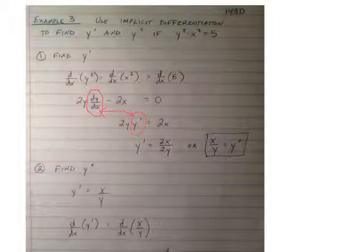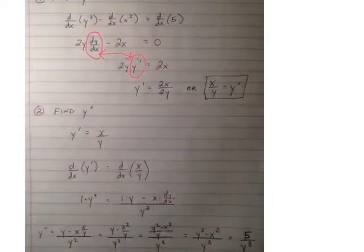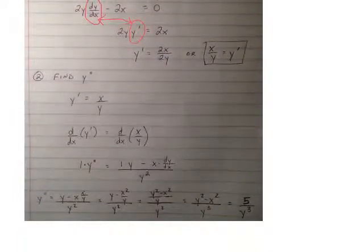When we're asked to find the second derivative, what we're asking is find the derivative of y prime. So if y prime is x over y, and I want to take the derivative of that, I'm going to need to use the quotient rule, because I've got a quotient. So the derivative of the left side would become y double prime, and the derivative of the right side, we need to do low d high minus high d low, over the square of what's below. So the derivative of x times y minus x times the derivative of y, all over y squared.